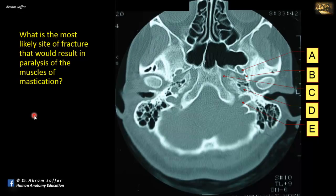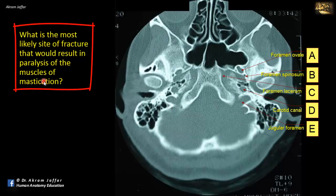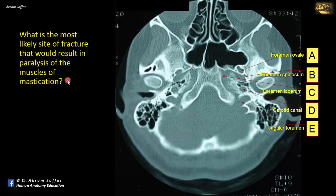What is the most likely site of fracture that would result in paralysis of muscles of mastication? This is an axial CT of the skull showing foramen ovale, the oval foramen within the sphenoid bone, and behind it is foramen spinosum. Here is the petrous part of the temporal bone, and at its apex is foramen lacerum. Within the petrous temporal bone is the carotid canal, and behind this foramen is the jugular foramen. The fracture resulting in paralysis of muscles of mastication would involve the mandibular division of the trigeminal nerve, which passes through foramen ovale. So the fracture at A would result in paralysis of the muscles of mastication on the same side.